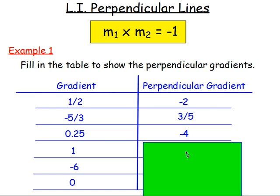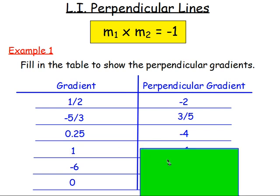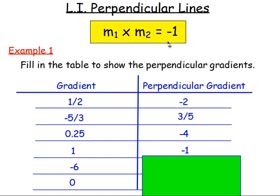If you have just one, you can think of it as the fraction one over one. Turn it upside down and you still get one over one, which is still one. Change the sign, so it becomes negative one. Alternatively, think about it as: one times something to get negative one would have to be negative one.